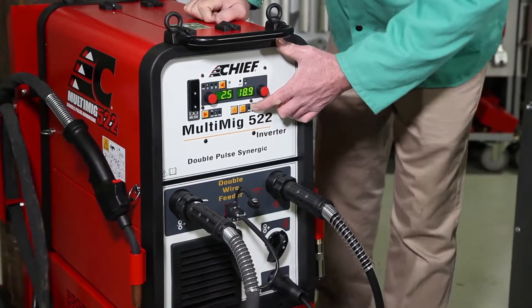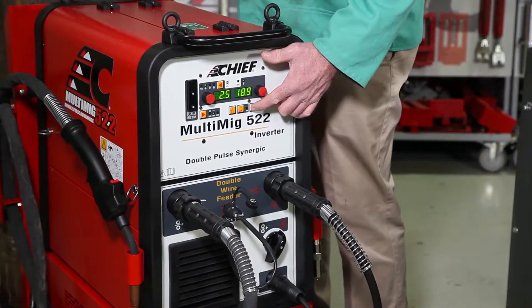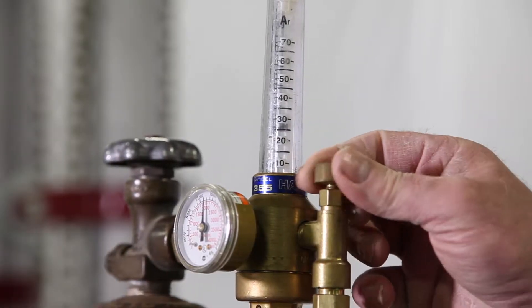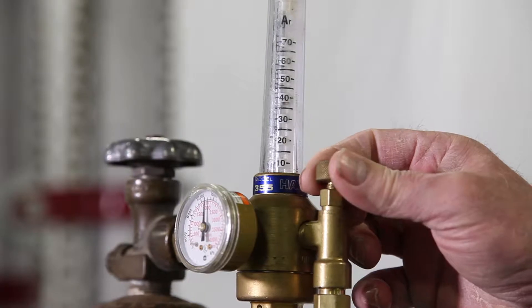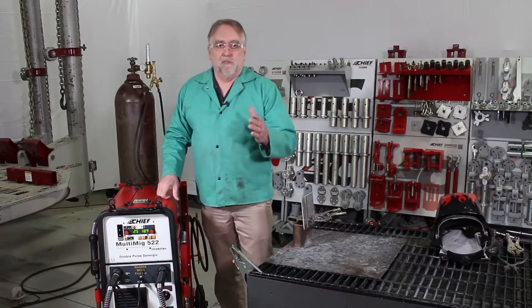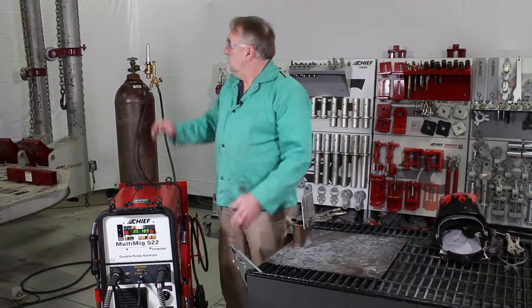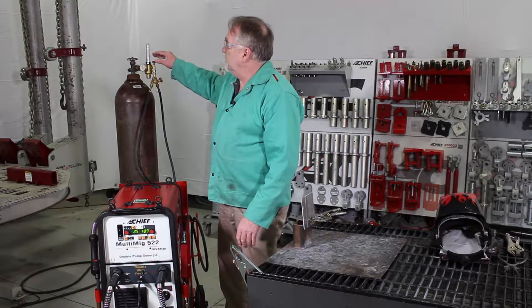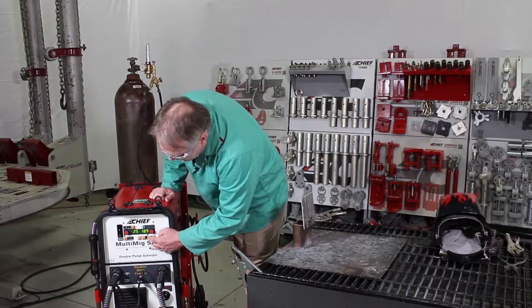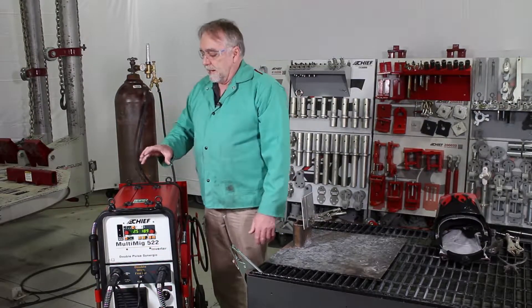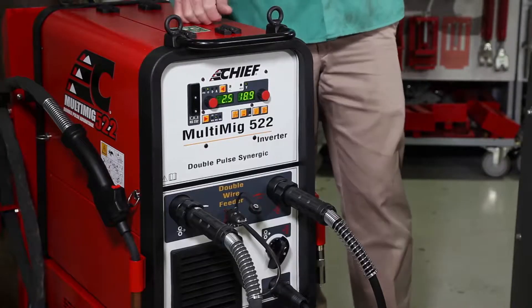After we do that, using the gas purge button on the front of the machine, we can get some gas flow started and set the flow rate where we want it to be. For aluminum welding you're going to have to have the flow rate much higher than you're used to with steel welding. I'm setting this at 40 cubic feet per hour. Gas purge button again to turn the flow off. We're set up here.